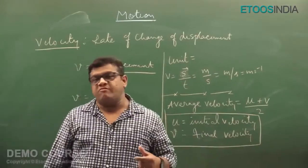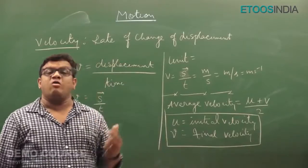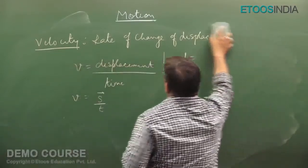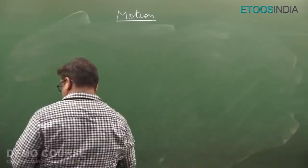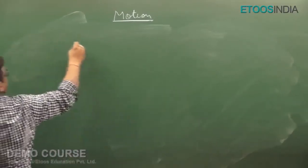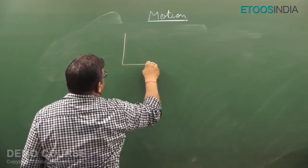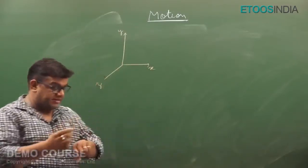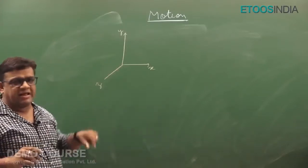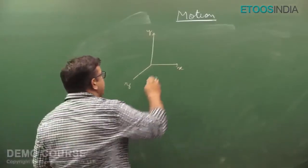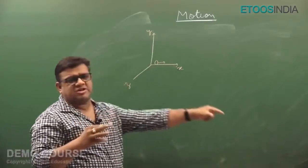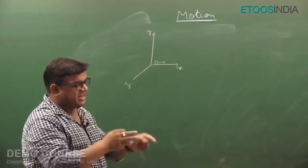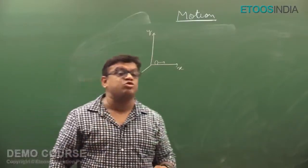I was telling you about motion in one dimension, two dimension, and three dimension. Let me explain what this means and how linear motion is associated with it. Suppose this is the x-axis, this is the y-axis, and this is the z-axis. If I take a corner of the room and throw a ball straight, and it moves in a straight line and strikes the other corner, the ball is said to be in motion in one dimension.